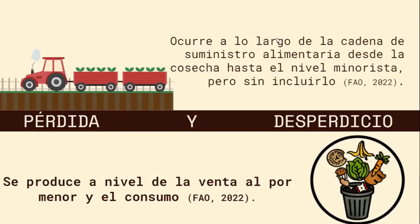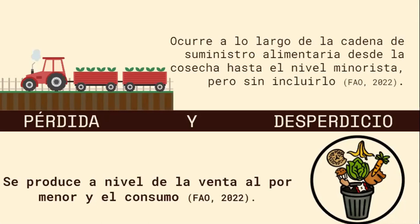Una vez que llega a estos mercaditos locales, que llega a los tianguis de nuestra colonia, pues ahí es cuando empieza el desperdicio. Y el desperdicio se produce a nivel de venta local o menor. También nosotros desperdiciamos en los hogares. En México tenemos una gran pérdida y desperdicio de alimentos. Ustedes pueden ver aquí una cadena de suministro de alimentos. En esta cadena de suministros se ve la forma tradicional de cómo se mueve el transporte de estos alimentos hasta que llega al consumidor final.